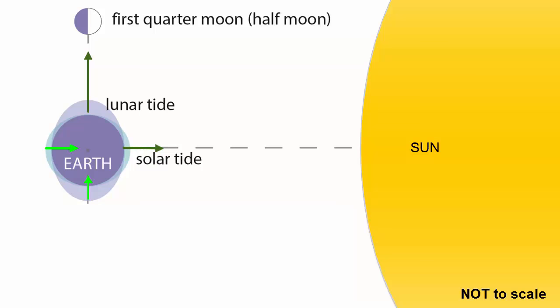Notice the difference in force shown as differences in arrow length are much greater for the lunar bulges than for the solar bulges, and hence the lunar tides are the dominant ones and the ones that dictate tidal period and patterns.